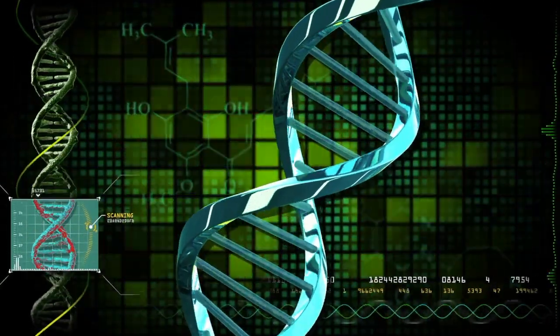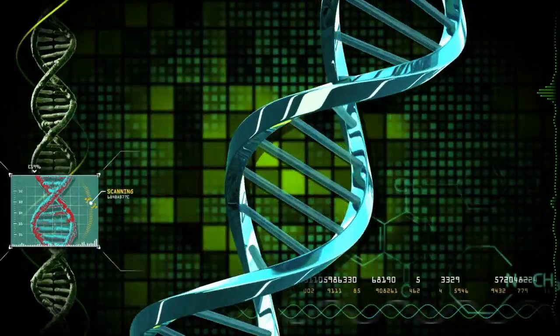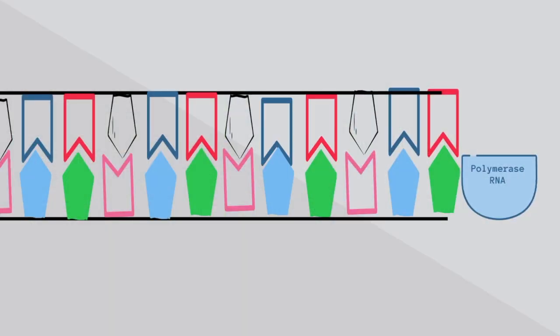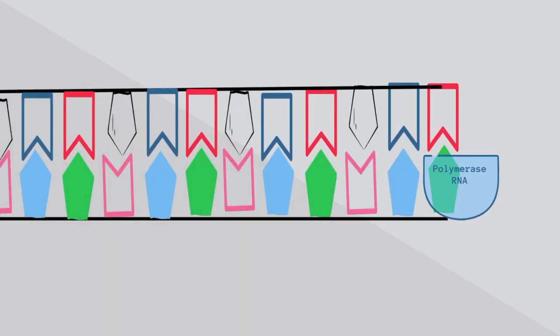The first stage of protein synthesis is called transcription. When a gene is switched on, RNA polymerase attaches to DNA and causes it to unzip. This is called the initiation stage.